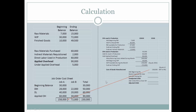What was moved out of work in process into finished goods, as reflected in the journal entry, equals cost of goods manufactured. We can calculate cost of goods manufactured from this information, and it equates to purchases when looking at cost of goods sold calculations.